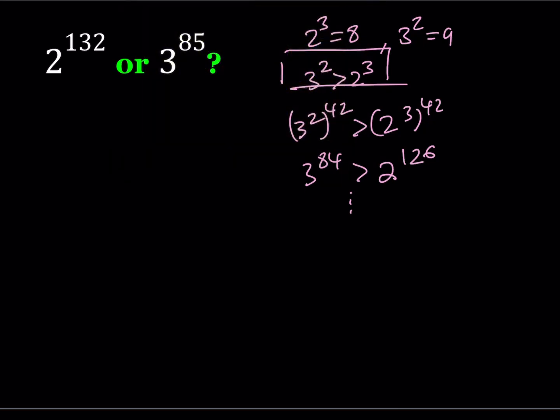I can evaluate 3 to the power 12 and for the sake of time I'm just going to give you what it is: 531,441. And I'm going to evaluate 2 to the power 19 which is 524,288. So these numbers are pretty close.